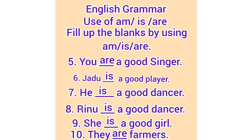Number eight: Rinu dash a good dancer. Rinu is a good dancer. Number nine: she dash a good girl. She is a good girl. Number ten: they dash farmers. They are farmers.